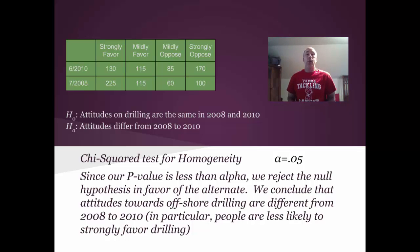So what does this mean? Since our p-value is less than alpha, we reject the null hypothesis and favor the alternate. And we conclude that attitudes towards offshore drilling are different from 2008 to 2010. And if we want to dig deeper, if you take a look at that strongly favor column, people are less likely to strongly favor drilling. Notice how it changed from 225 to 130. So we could do that analysis as a follow-up.